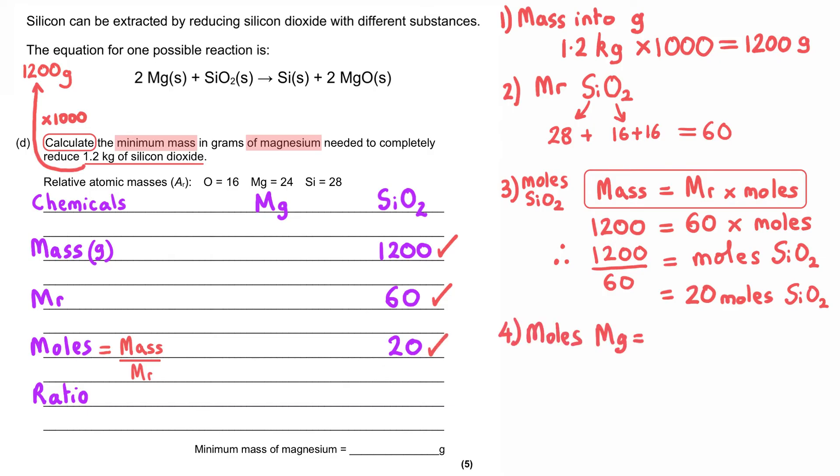And then for the fourth mark, we need to work out the moles of magnesium which would precisely react with 20 moles of silicon dioxide. And to do this, we need to return to the chemical equation. We can see from the chemical equation that two moles of magnesium react with one mole of silicon dioxide.